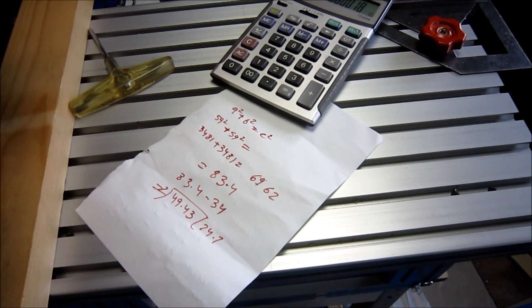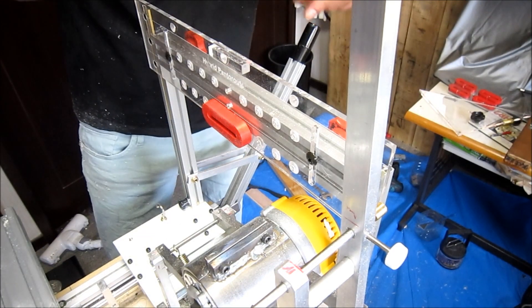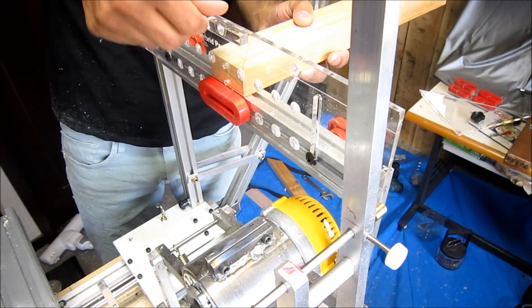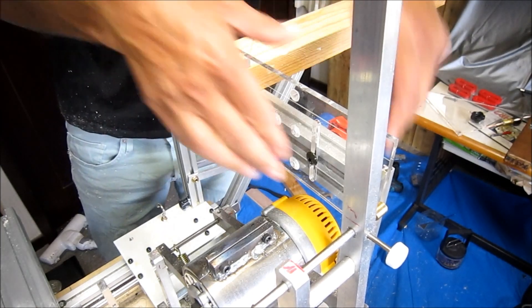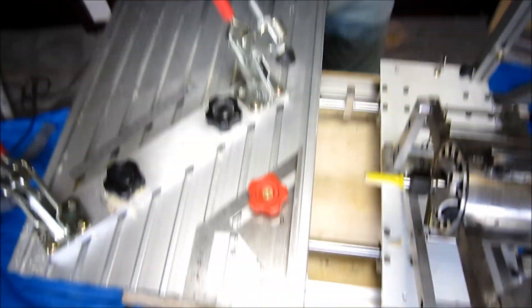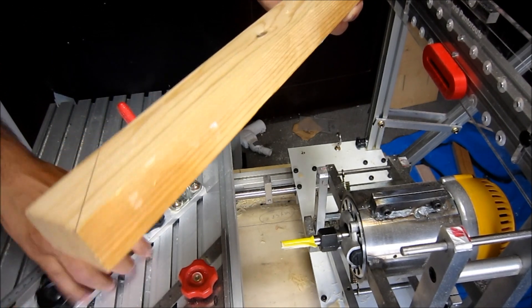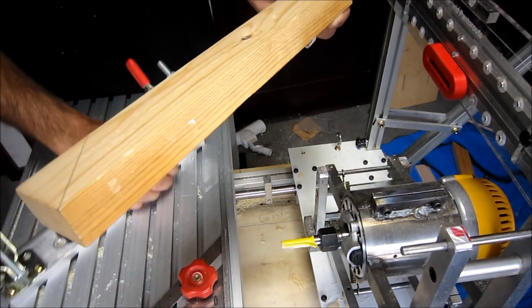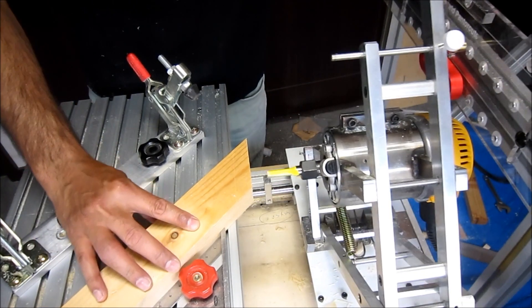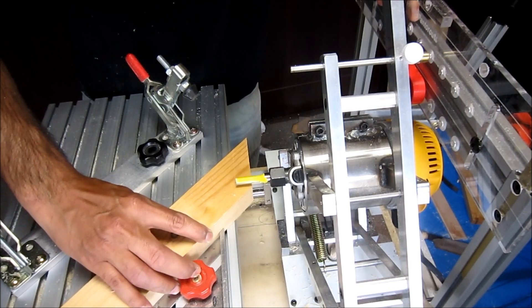So let's start. First we need to make sure our tenon is going to come in the center. For that, just bring it like this way here, lock it, and then we're going to come this way, and fit here. Bring it like this way here and then make sure your cutter is on the line.